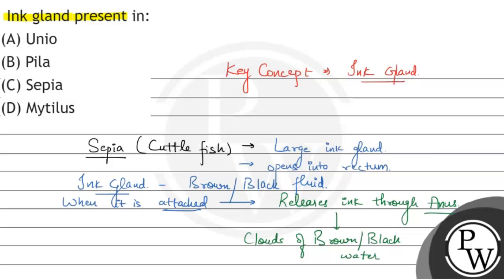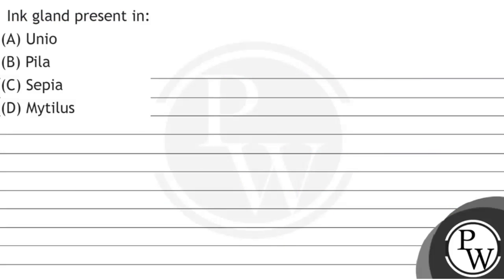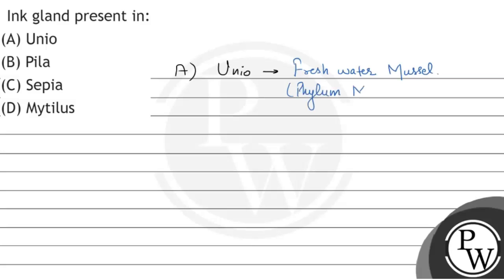Now let's look at the other options. Option A is Unio. Unio is a member of phylum Mollusca and it is a fresh water mussel.